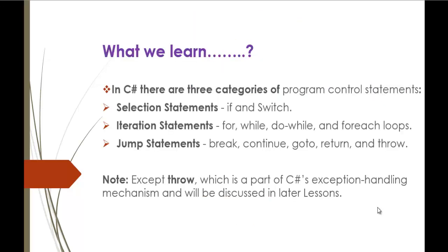C-Sharp provides three categories of program control statements. They are: selection statements, which includes if and switch; iteration statements, which includes for, while, do-while, and for-each loops; and jump statements, which includes break, continue, goto, return, and throw. Note: except throw, which is part of C-Sharp's exception handling mechanism, and this will be discussed in later lessons.